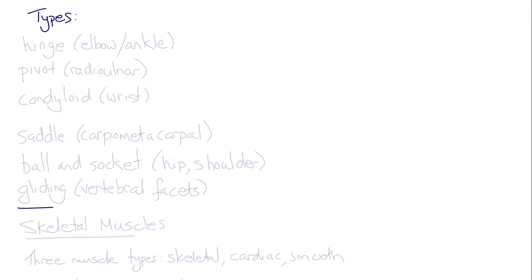The types of diarthrodial joint include hinge joints like the elbow and ankle, pivot joints like the radioulnar joint between the radius and ulna of your forearm, and condyloid joints like the complex joints at the wrist.